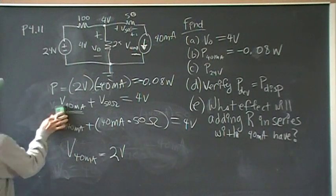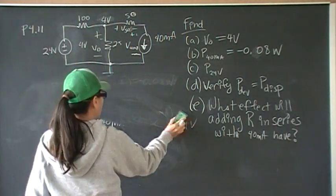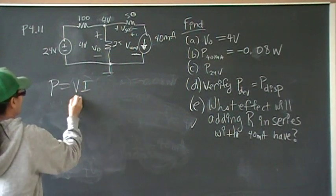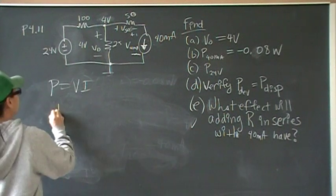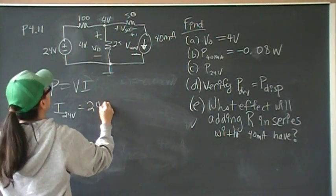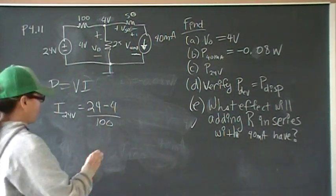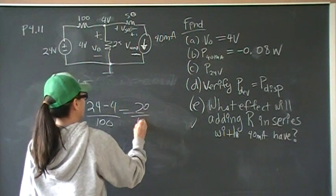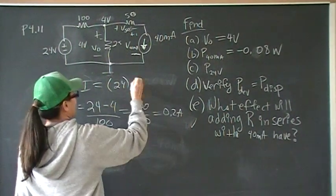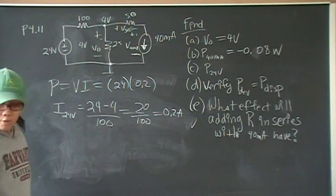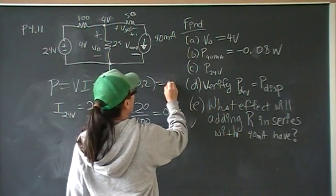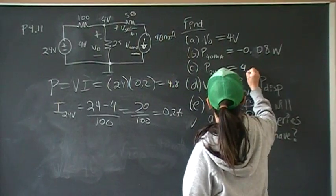And for part C, we want to find the power developed in the 24 volts. And again, we know that P is equal to VI. V, we know that's easy. That's 24. I is going to be, I from the 24 volts, that's going to be 24 volts minus 4 over 100, which is just 20 over 100, which is 0.2 amps. So this is going to be 24 times 0.2, and 24 times 0.2 gives me 4.8. So this is 4.8 watts.